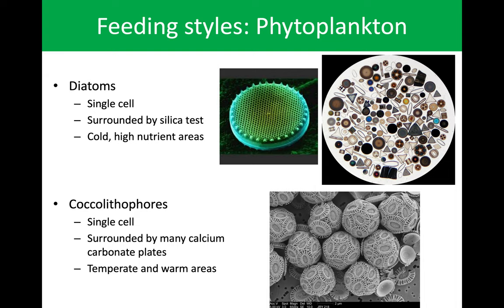Another group is coccolithophores. These are also single-celled and have a shell as well, but these shells are made of calcium carbonate. The danger there is with increasing acidity in the ocean — the pH is dropping. When that happens, calcium carbonate doesn't form as readily and these shells begin to dissolve. So with ocean acidification, we anticipate that these particular phytoplankton will be in danger. We typically find these in temperate and warmer areas, so not many off the coast of California.